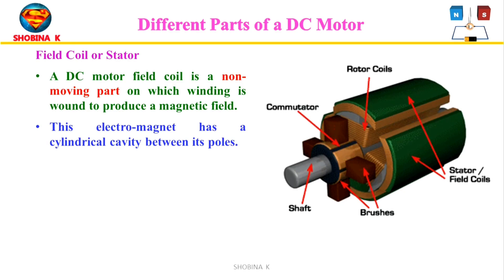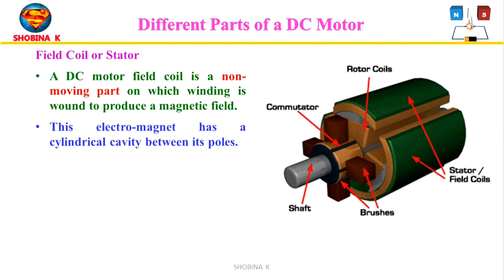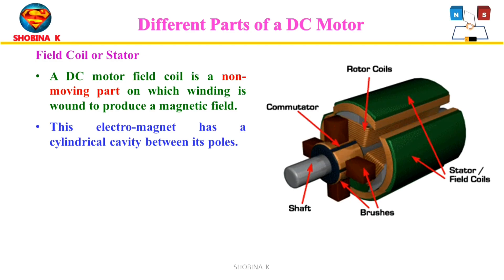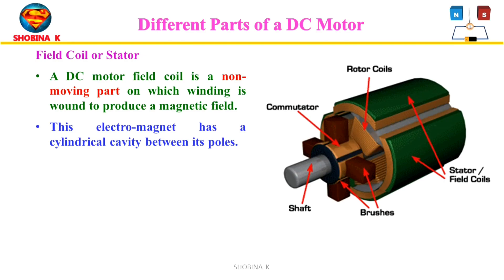The stator is the stationary component found in electric motors and generators. It consists of a laminated core and coils of insulated wires known as windings. When alternating current is applied to the stator, it creates a rotating magnetic field. It is the static part of the motor which provides protection to the internal structure. In a DC motor, the stator provides the rotating magnetic field that drives the armature to rotate.